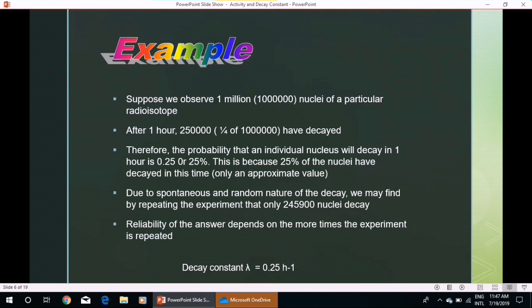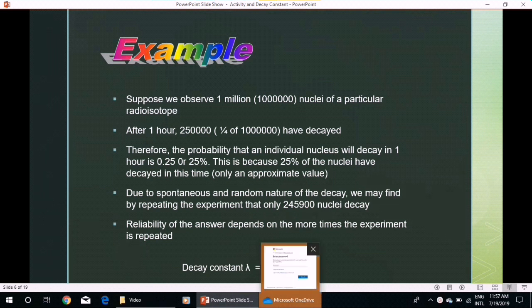Activity of a sample cannot be measured directly, as it is not easy to detect all of the radiations emitted. Some escape past the detector and some may be absorbed within the sample itself. Therefore, a Geiger-Müller or GM tube placed in front of a radioactive source only detects a fraction of the activity.